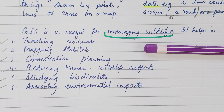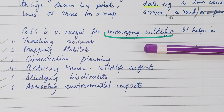GIS is very useful for managing wildlife. It helps in tracking animals, mapping habitats, conservation planning, reducing human-wildlife conflict, studying biodiversity, and assessing environmental impacts.